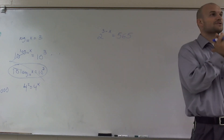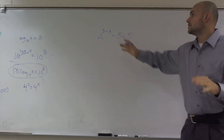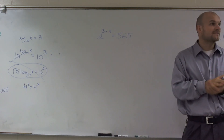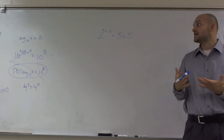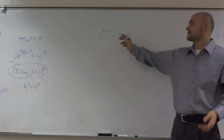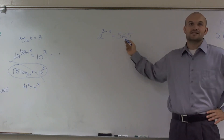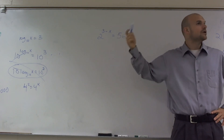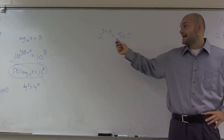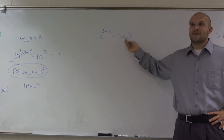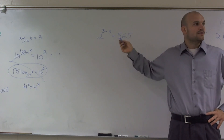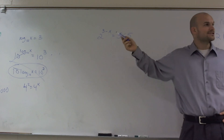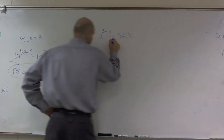We're going to solve this two different ways. You have 2 raised to 3 minus x equals 565. Whenever you have an exponential equation, a couple things to look at: can we write 2 or 565 as a power of 2, with 2 as the base? No. Since I can't say 565 is 2 to some power, I need two different ways to solve.